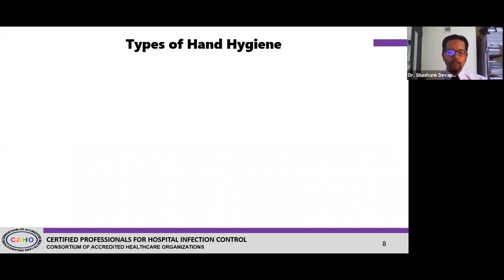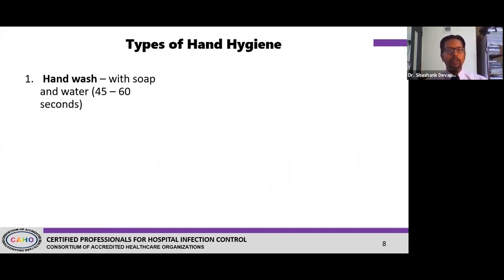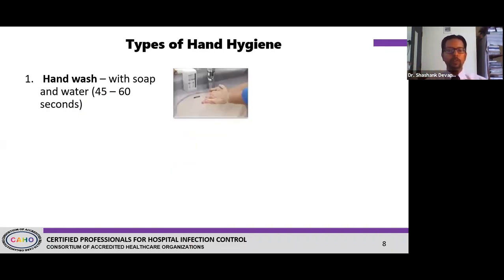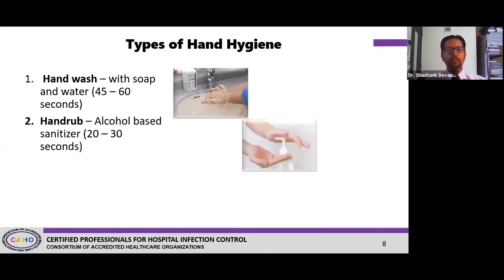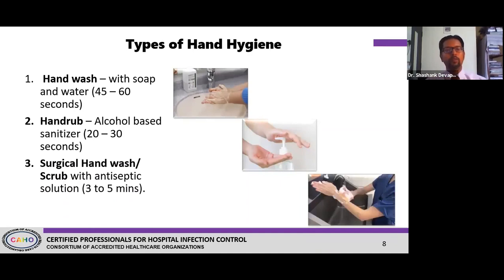There are three types of hand hygiene. The first is the hand wash, done with soap and water — liquid soap or water — for about 45 to 60 seconds, used everywhere at home and hospital. The second is the hand rub or alcohol-based sanitizer, typically done for about 20 to 30 seconds when hands are visibly clean and not soiled. The third is surgical hand wash or surgical scrub using antiseptic solution, which is specific for operation theaters and sterile procedures.